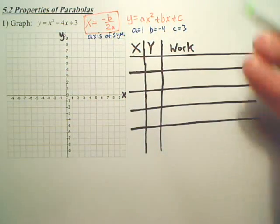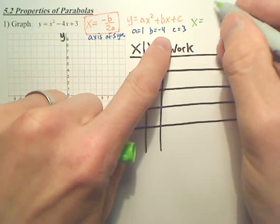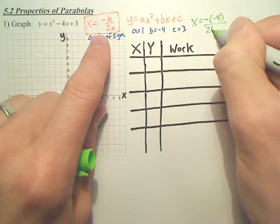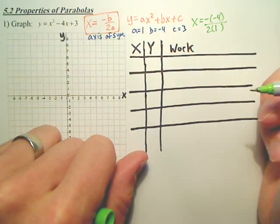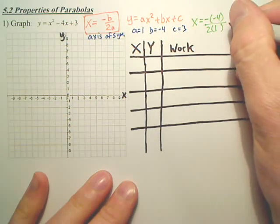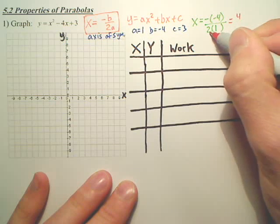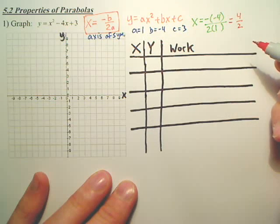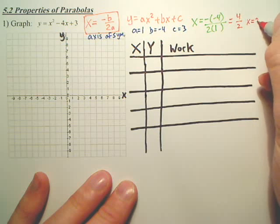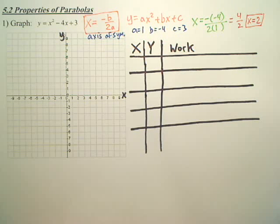So, let's find it real quick. x equals negative b, so the opposite of negative 4, over 2 times a. a is 1. So, negative 4 gives us positive 4. 2 times 1 is 2. So, we now have x equals 2. That is your axis of symmetry.